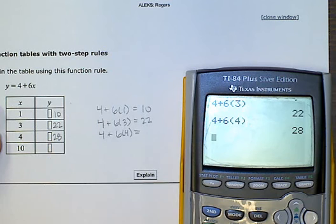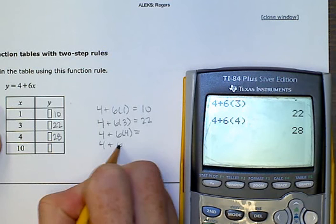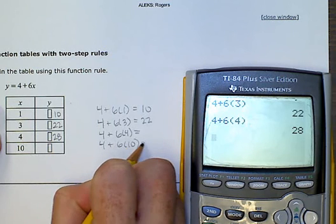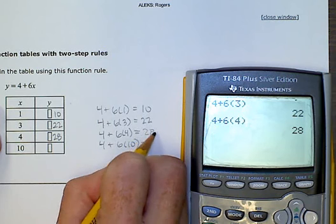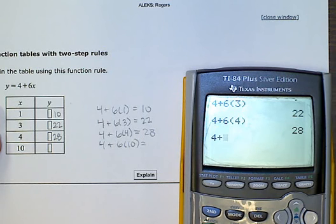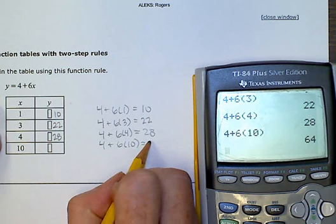So now we are going to do it with 10. 4 plus 6 times 10. That gives me the answer to 64.